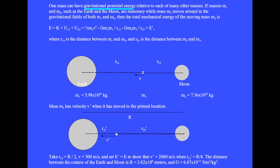Mass m3 has gravitational potential energy relative to each of the other two masses. The total mechanical energy of the moving mass m3 is given by the sum of kinetic energy and both potential energies. When m3 moves to location r-prime, it has a new energy E-prime that equals the original energy E. R13 is the distance between mass 1 and mass 3 at the second moment in time, R23 is the distance between mass 2 and mass 3, and R23-prime is that distance at the second moment. If v equals 300 meters per second, show that v-prime equals 2060 meters per second.